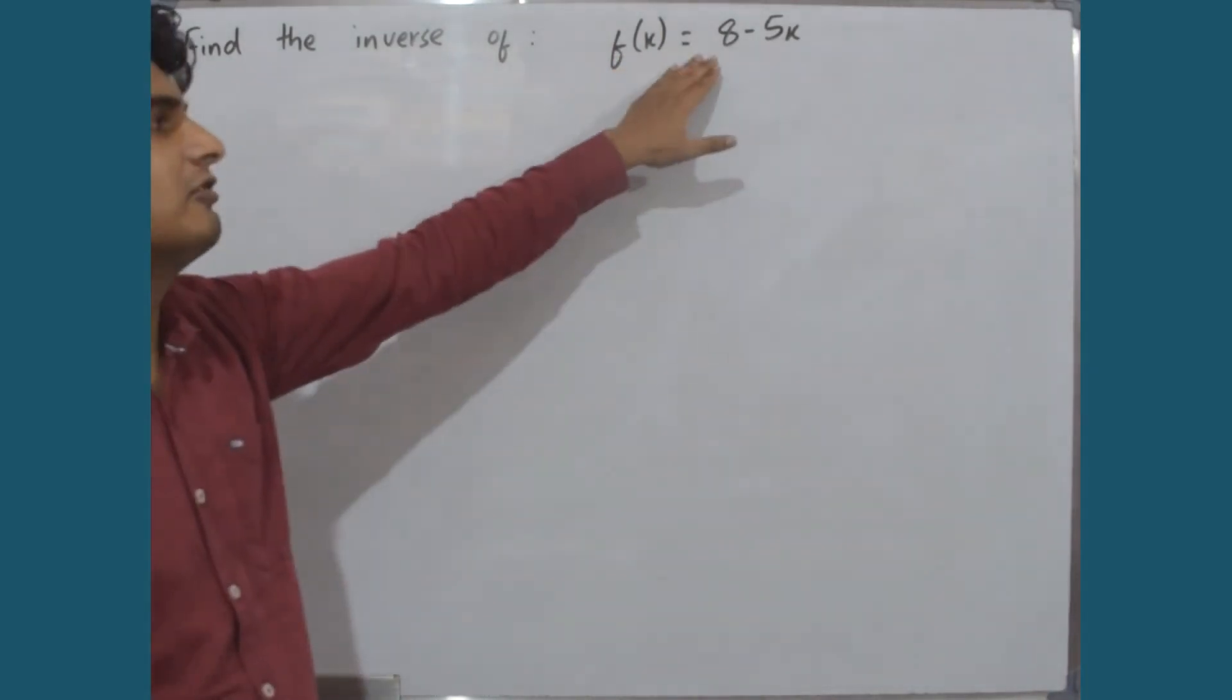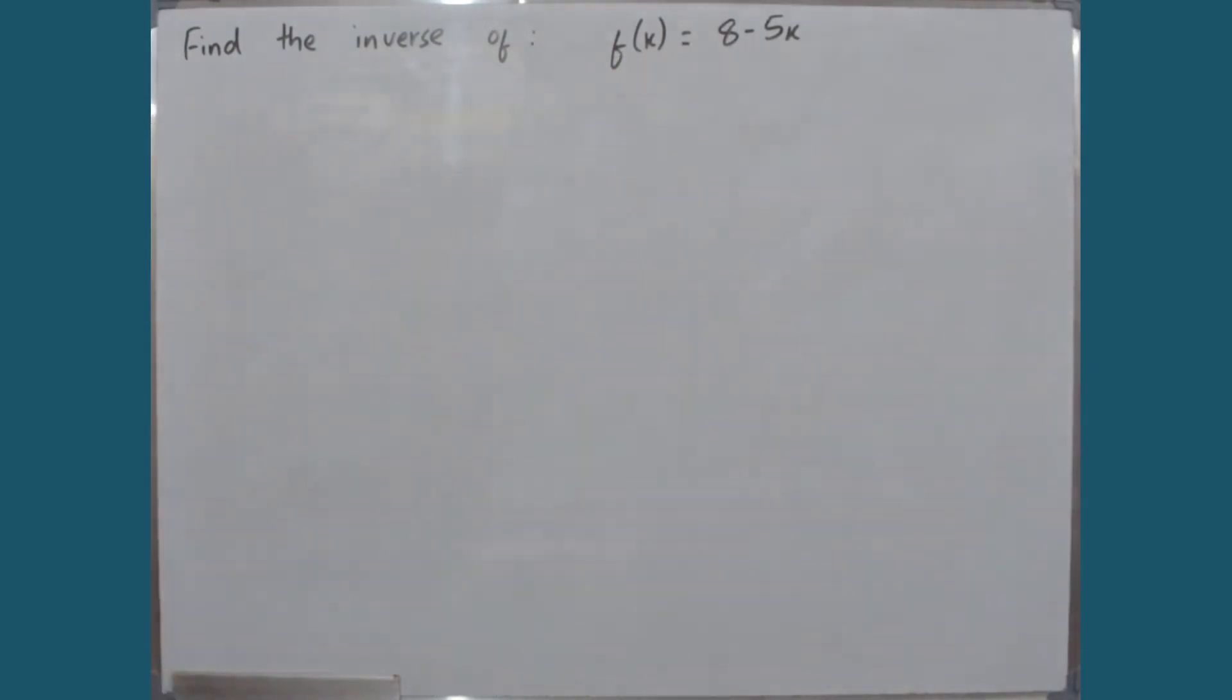To calculate the inverse of this function, we need to check whether the function's inverse exists. For the inverse to exist, the function must be one-to-one and onto. So we have to check whether this function is a one-to-one and onto function or not.